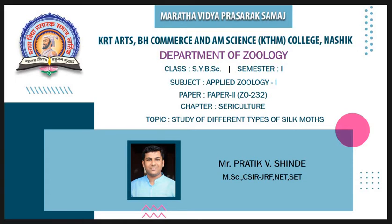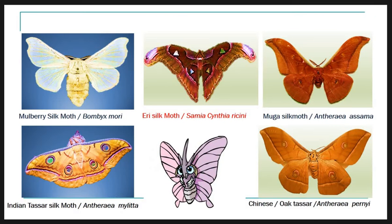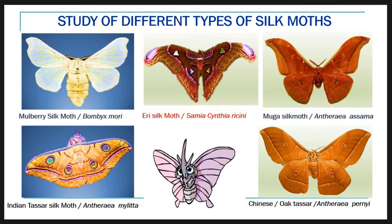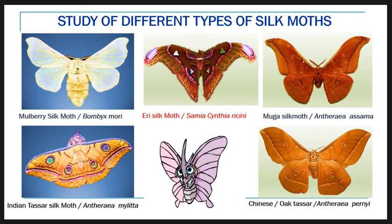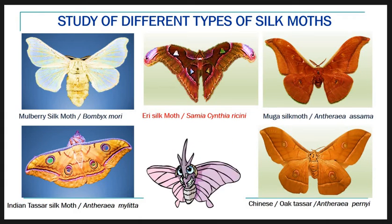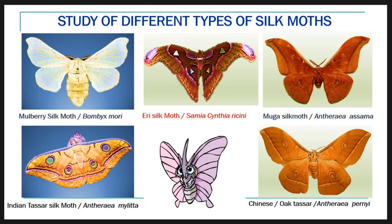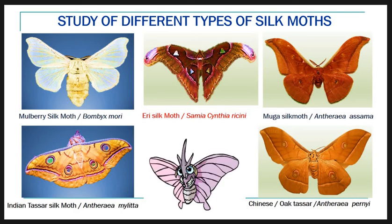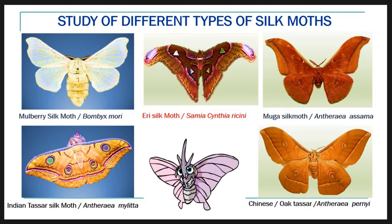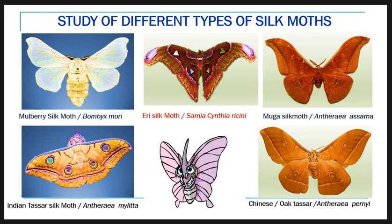Let's start with the introduction. In the previous lecture, we studied different types of silk moths in brief. There are 4 kinds of natural silk which are commercially produced. Out of them, mulberry silk is the most important and contributes about 95% of the total world silk production. The other 3 commercially important kinds are non-mulberry silks: eri silk, tassar silk, and muga silk.